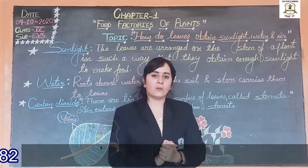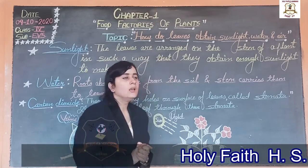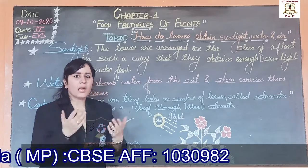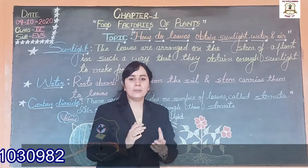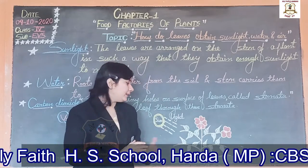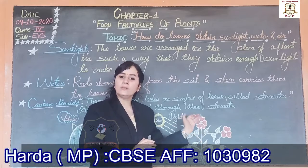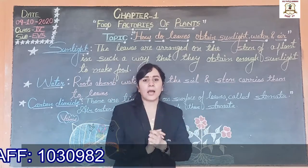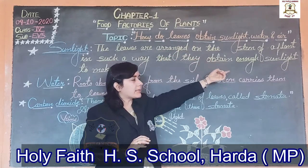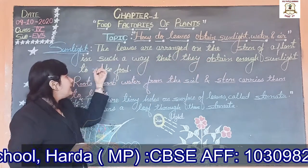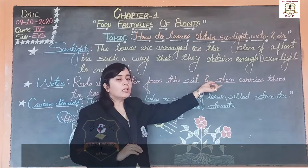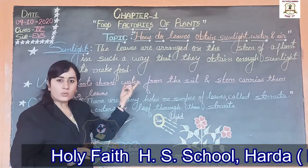Let us see one by one. First is sunlight. How do leaves get sunlight? As we know that leaves are flat, so they can absorb sunlight that falls on them. And sometimes the leaves are arranged on the stem of a plant in such a way that they absorb enough sunlight to make food.